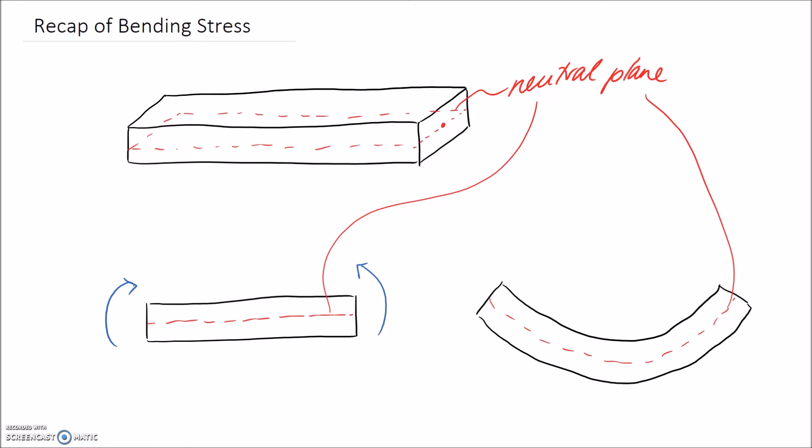However, what happens is as you bend your member you are going to introduce some strain onto the outer edges of your member. In this case here where I've bent it like so, the inside or the top side of my member is going to end up in compression. This is because all the little molecules on this side of the beam are getting squashed together, thus putting them into compression.